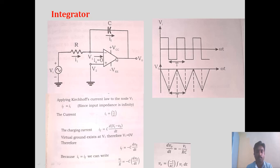V1 minus V0 is the voltage across the capacitor, so d(V1 − V0)/dT. C into d(V1 − V0)/dT is the current flowing through the capacitor.